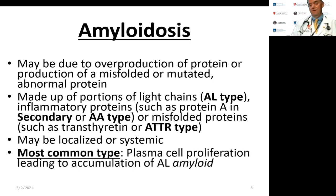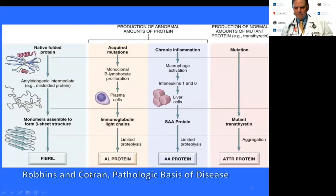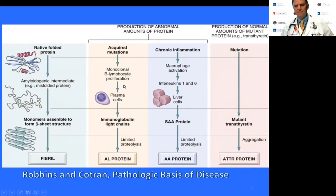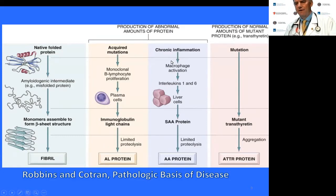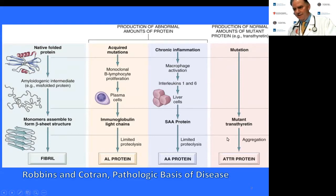Amyloid can be either localized or systemic. The most common in the United States is the AL type, due to an underlying plasma cell clonal proliferation. Different mechanisms lead to fibril formation: either abnormal production from a plasma cell dyscrasia with AL, or from chronic inflammatory states with interleukins — particularly IL-1 and 6 — causing hepatocytes to overproduce SAA protein for AA type, or accumulation of an abnormal protein like ATTR that can't be adequately degraded.